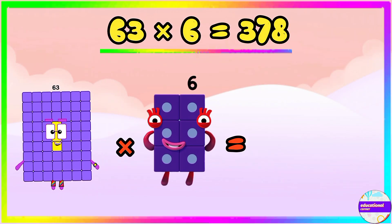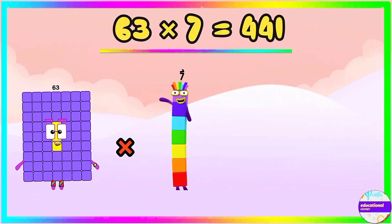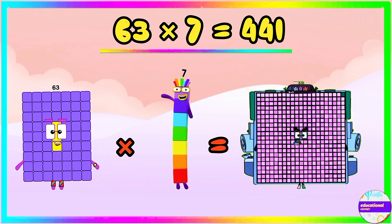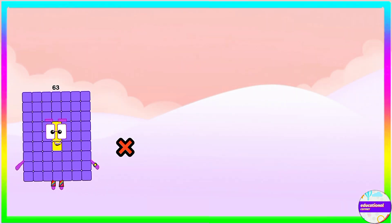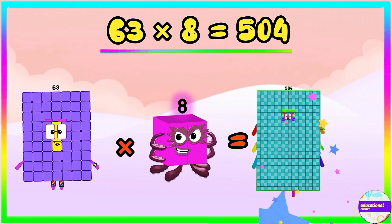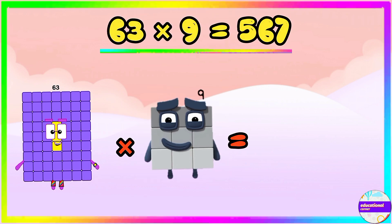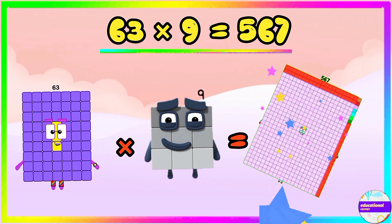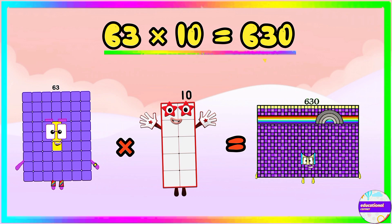63 multiplied by 6 equals 378. 63 multiplied by 7 equals 441. 63 multiplied by 8 equals 504. 63 multiplied by 9 equals 567. 63 multiplied by 10 equals 630.